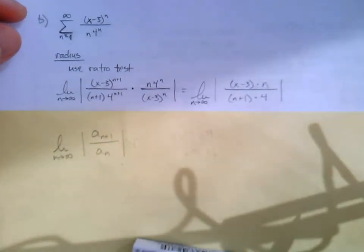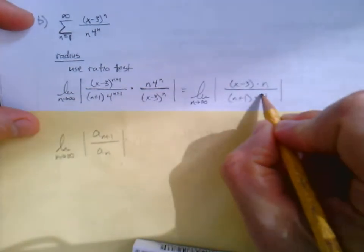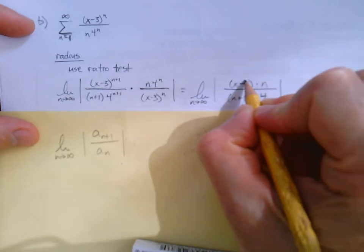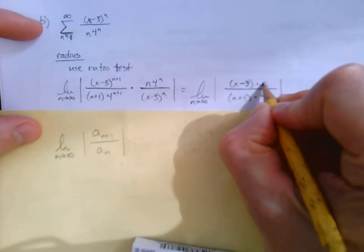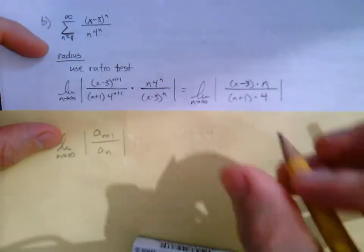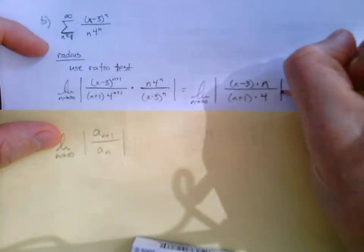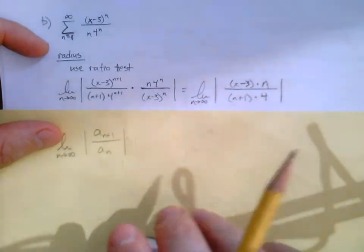We have x minus 3 to the first will not cancel, and then that n will not cancel. On the bottom, the n plus 1 and then the 4 to the first—everything else cancels out. I notice I'm starting to get some shadows here, so I'll really apologize for the fuzziness on the camera. But I think you guys can understand what I'm presenting here, especially when I read it to you. Of course that's all in absolute values and the limit to infinity.